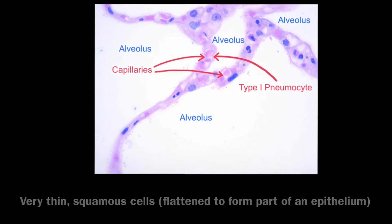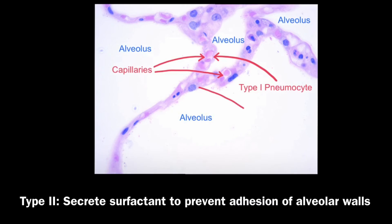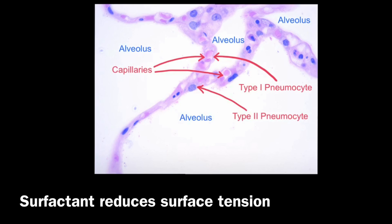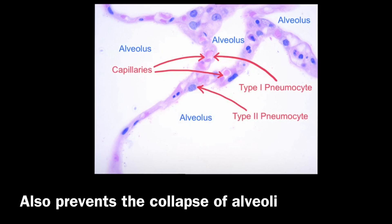The other type of pneumocyte are type 2 pneumocytes, and these are larger, more cuboidal cells, and they occur more diffusely — they're more spread out than type 1 pneumocytes. Type 2 pneumocytes secrete surfactant to prevent the adhesion of alveolar walls to each other, and they do this by reducing the surface tension. This also prevents the collapse of the alveoli.